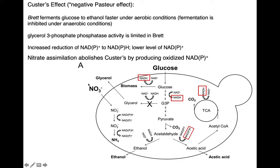One of the things the microbe will do is nitrate assimilation to abolish the Custer's effect — basically introducing a new pathway to spend some of this excess reducing power. If nitrate is available, the microbe can reduce the nitrate and burn off excess reductant, and these oxidized NADs can then be used for various reactions, giving a bit of balance.